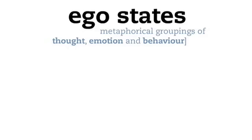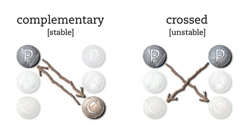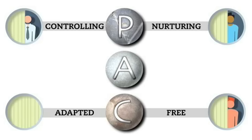In the first video I looked at ego states — metaphors for different styles of thinking, feeling and behaving. I touched on controlling, nurturing, adapted and free styles, referred to in TA as parent and child, and contrasted them with the adult. I also looked at complementary transactions, where styles of thought and behaviour between two people meet to produce a stable dynamic, and cross transactions, where the respective styles conflict to produce unstable dynamics. In this video I'll be looking at games and introducing the split transaction. But first, a little more on ego states.